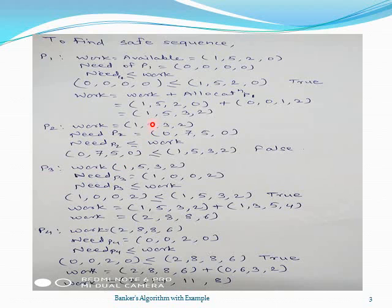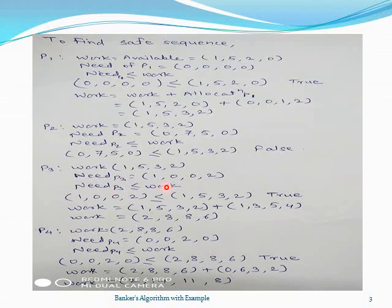We consider the same work value for P3 because in P2's case work did not get modified. So work remains [1, 5, 3, 2]. The need of P3 is [1, 0, 0, 2]. We compare need of P3 with work — it is true. So the value of work gets modified and process P3 is added to the safe sequence.